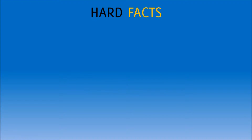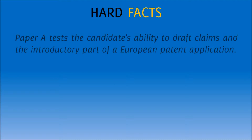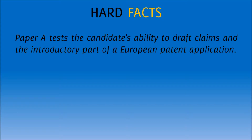As always, I would like to start with some facts first. The official description of the EPO for Paper A is: Paper A tests the candidate's ability to draft claims and the introductory part of a European patent application.